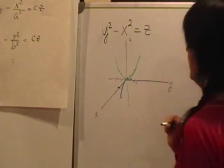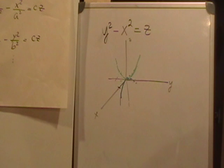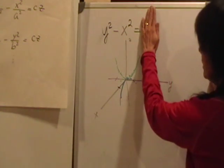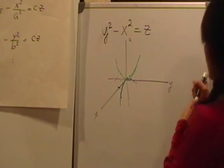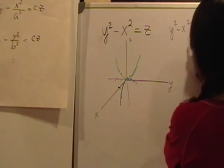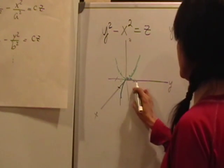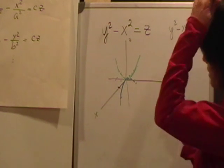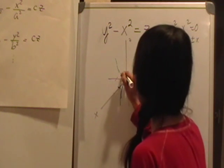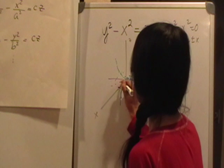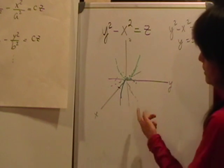I'll use blue for that xz trace. Now for the trace on the xy-plane, I set z equal to zero, giving y squared minus x squared equals zero, or y equals plus or minus x — just two lines intersecting at the origin.